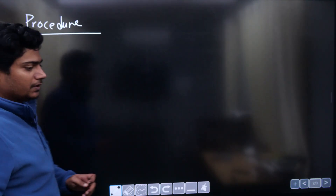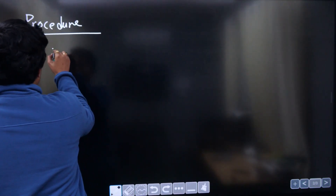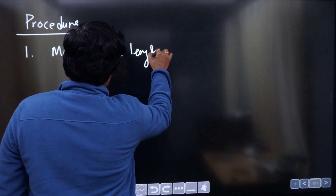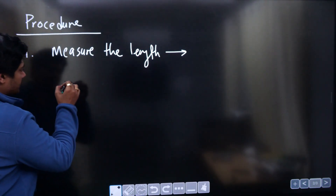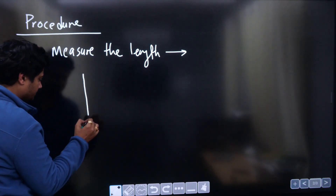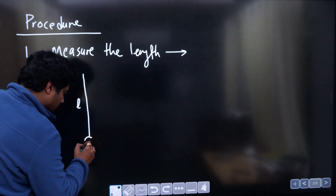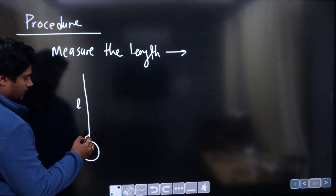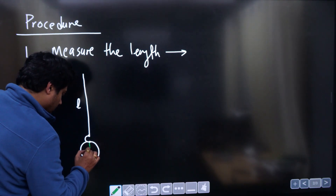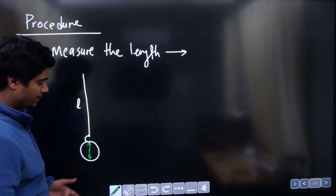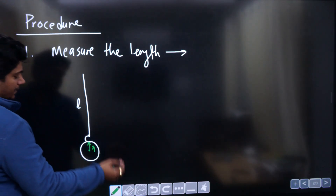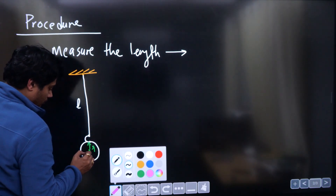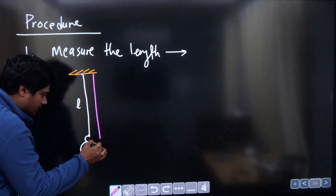The procedure is very simple. First of all, you need to measure the length. The setup is very simple: you have a string of length L, and then you have a ball connected to this string via a hook. You also need to measure the diameter of this ball using a screw gauge or vernier caliper. From that diameter you will get the radius. The length must be measured from the topmost point to the center of the ball.